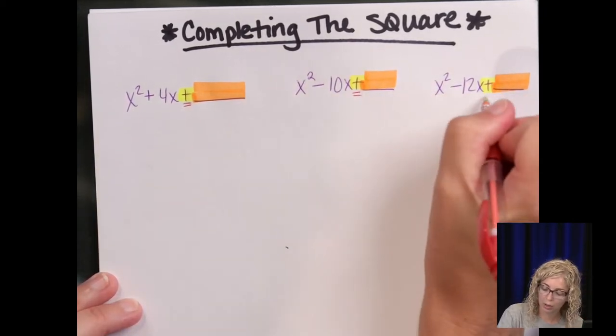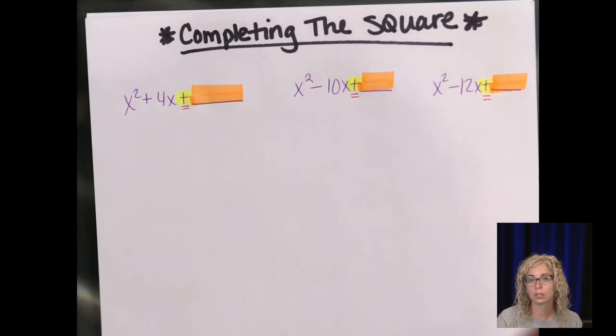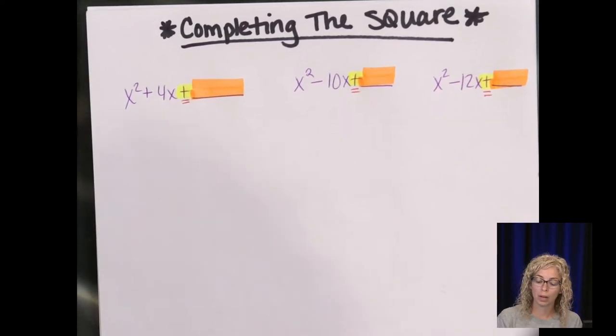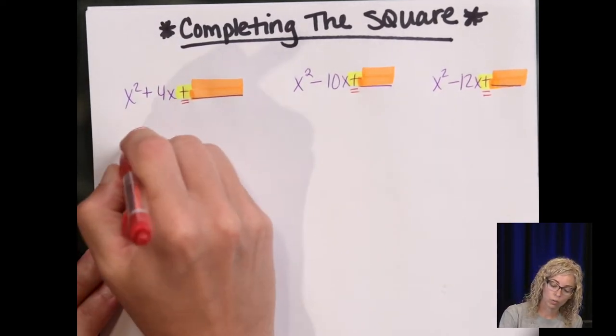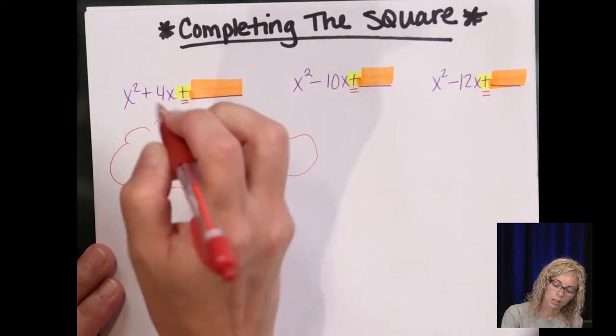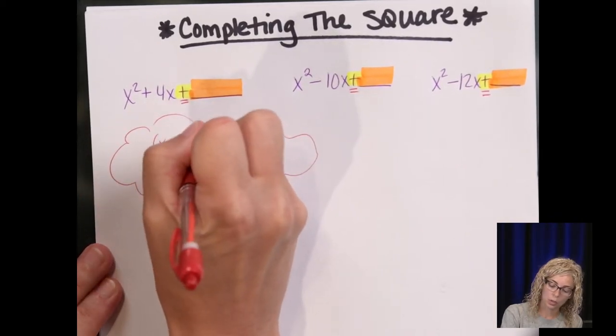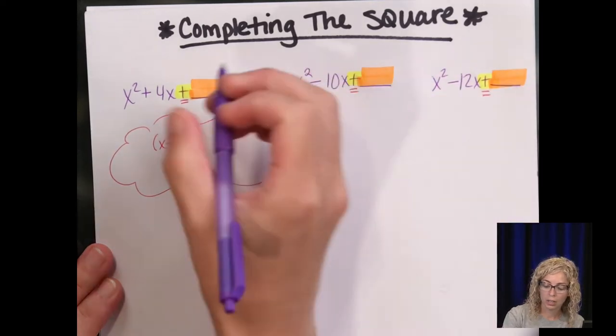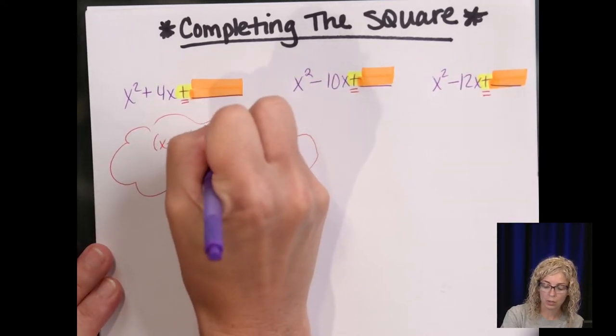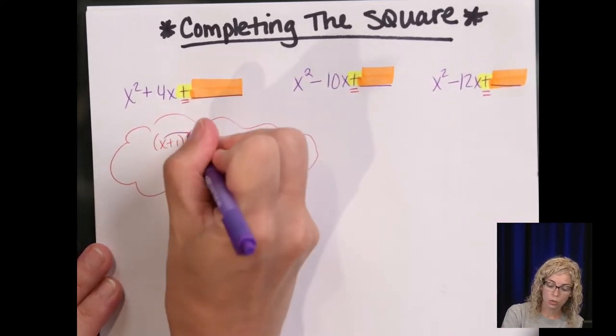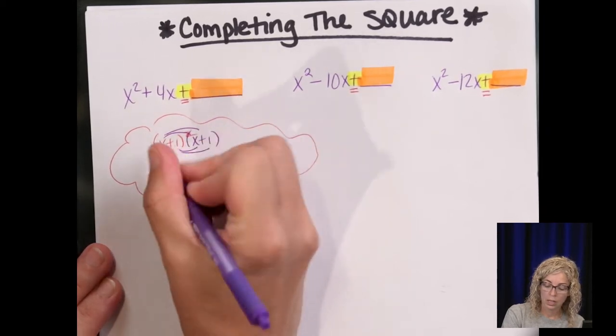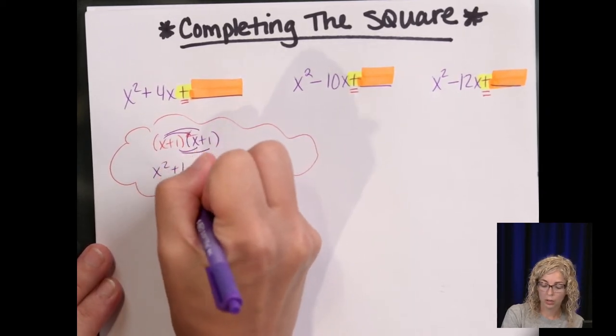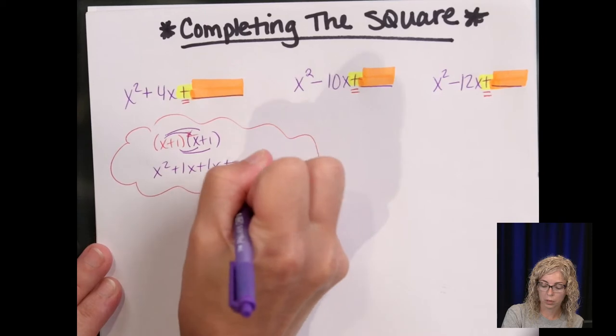Because remember, in a perfect square trinomial, that's what we get when we square a binomial. So if we go back and do x plus 1 squared, that means x plus 1 times x plus 1, and we distribute to get x squared plus 1x plus 1x plus 1.